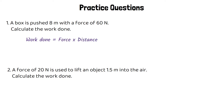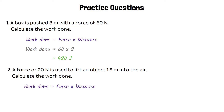We're going to use the equation work done equals force times distance. In the first question, the force is 60 newtons and the distance is 8 meters, so we do 60 times 8, which gives an answer of 480 joules. For the second question, it's exactly the same process. The force is 20 newtons and the distance is 1.5 meters, so we do 20 times 1.5, giving a work done of 30 joules.